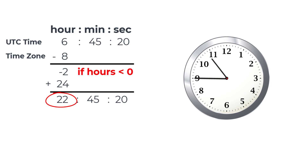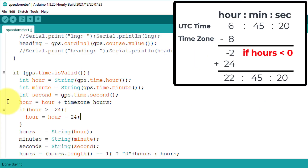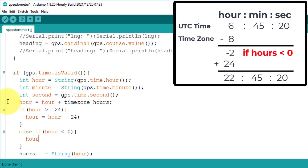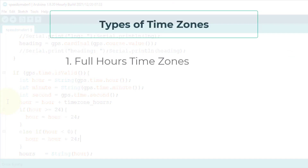This way you can fix the negative time. Let's implement it in the code. Here I will check if the hours are less than 0, and if this condition is true, then just add 24 to the hours and the time will be fixed. This way you can add the full hours time zone in your projects.